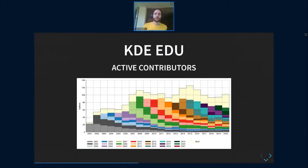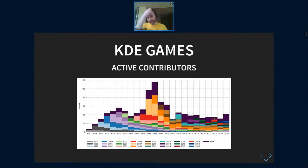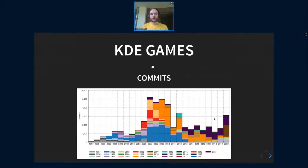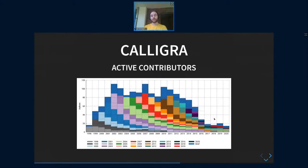For Education, it's mostly stable but decreasing a bit, and for commits there is a lot of variation between years. For Games, it's also not really looking that good, but most games are mostly done and don't need many more contributions. For Calligra, after 2012 the number of contributors decreased a lot due to Nokia stopping contributions to the Calligra project.